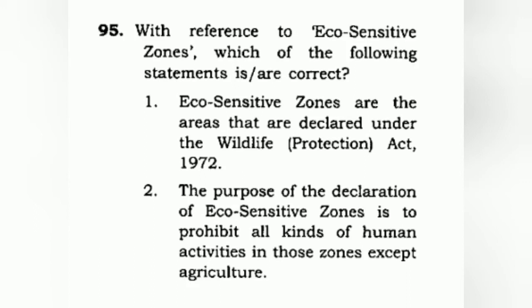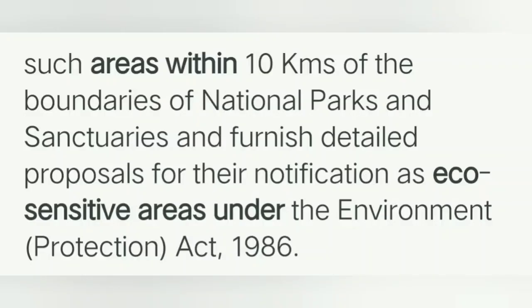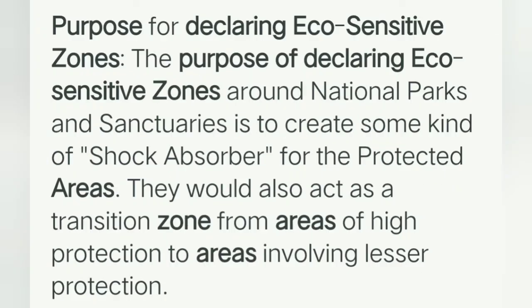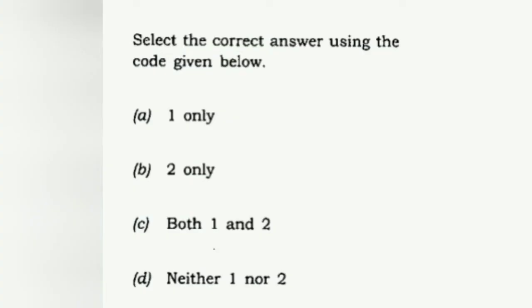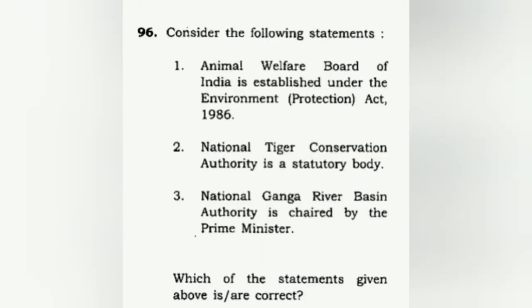With reference to eco-sensitive zones, which statements are correct? Statement one says eco-sensitive zones are areas declared under the Wildlife Protection Act, and statement two says their purpose is to prohibit all kinds of human activities including agriculture. Both are incorrect: eco-sensitive zones are declared under the Environment Protection Act, and their purpose is to act as a transition zone from areas of high protection to areas involving lesser protection. The correct answer is D: neither one nor two.